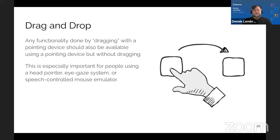Maybe something around drawing — if you were teaching young people how to draw shapes on screen. That's a good one! Drawing shapes like triangles and boxes could be done with single clicks, but freehand drawing — yes, that's a good exception. Freehand drawing would be a valid exception.